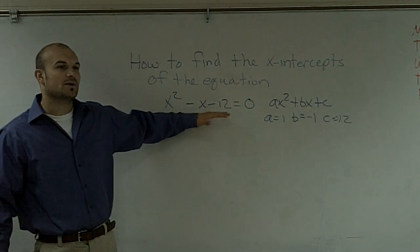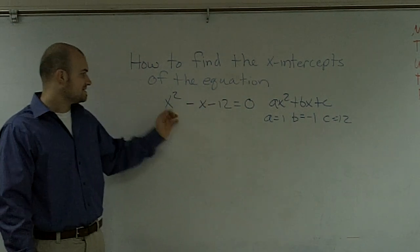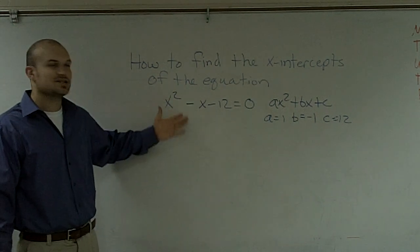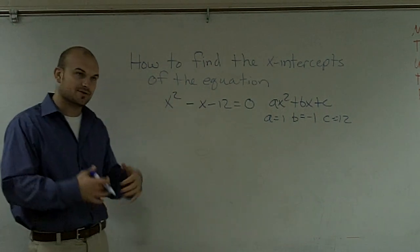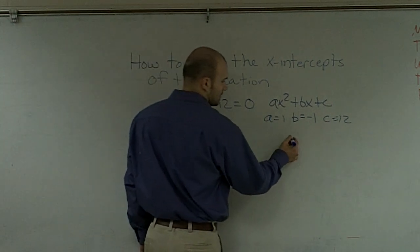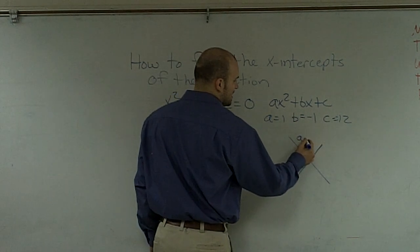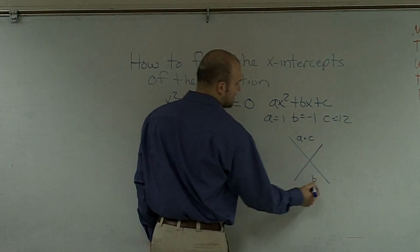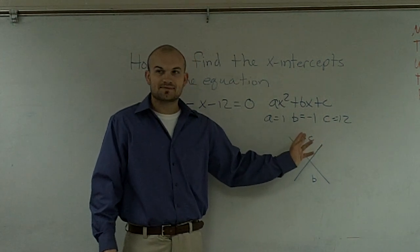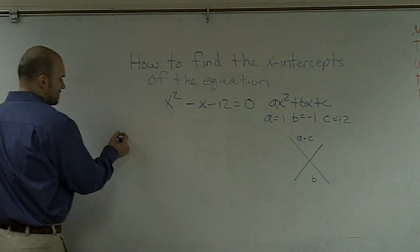Now, if I want to find out what the x-intercepts are, I need to find the values for x. Since I have an x squared and a negative x, I can't just use regular solving, so I'm going to use factoring. We look at a times c and b, then find what two numbers multiply to give you your a times c value and add to give you b.